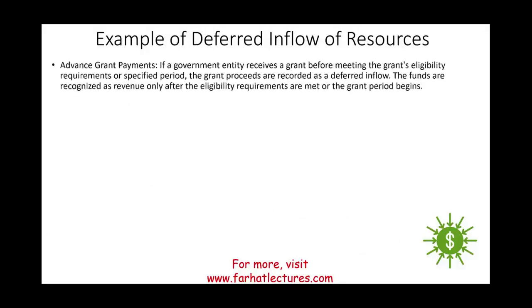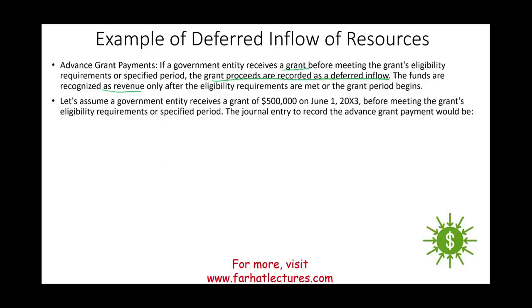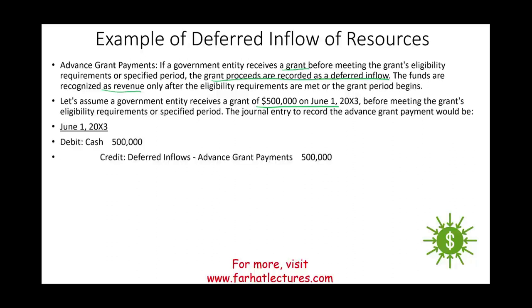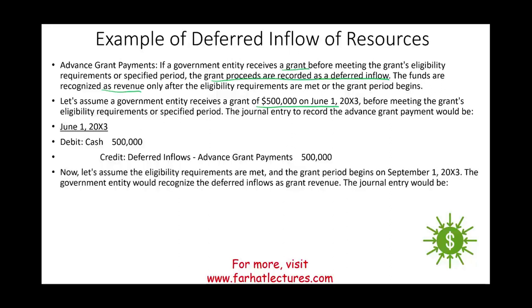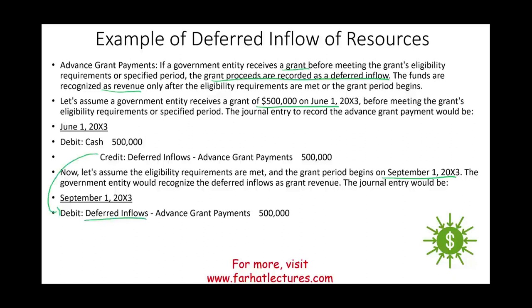Another example: if a government entity receives a grant before meeting eligibility requirements or the specified period, the grant proceeds are recorded as a deferred inflow. The funds are recognized as revenue only once eligibility is met. If $500,000 is received on June 1st before meeting grant eligibility criteria, we debit cash and credit the deferred inflow of resources — advance grant payment — because it is not revenue yet. Once the eligibility criteria begin on September 1st, we debit the deferred inflow and credit revenue. Now we have met the revenue recognition criteria.